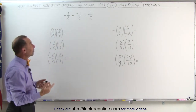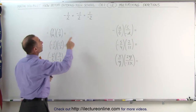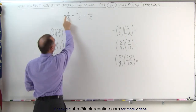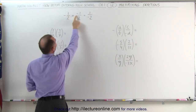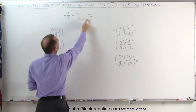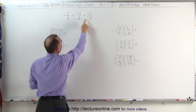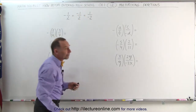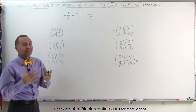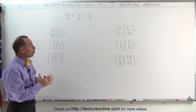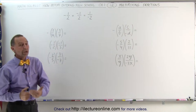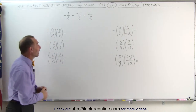Notice that when you write a fraction, you could put the negative sign in front of the fraction, or in front of the numerator, or in front of the denominator — and all three are exactly the same. They have the exact same meaning; there's no difference whatsoever. So it really doesn't matter where you put the negative sign.